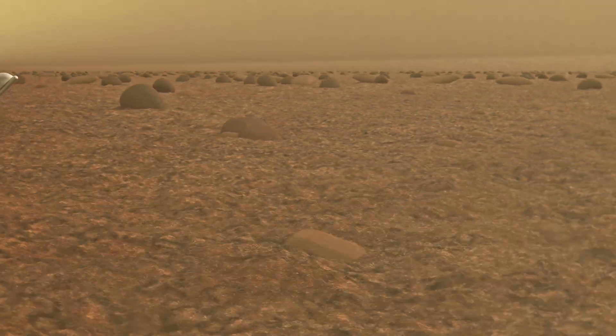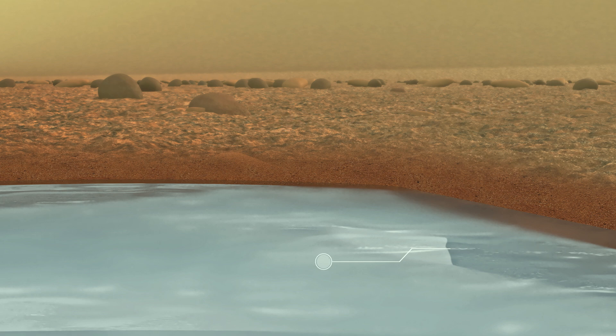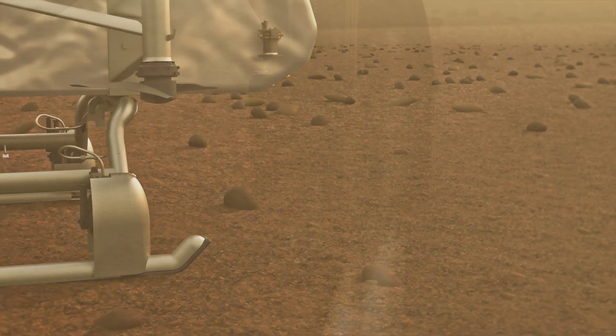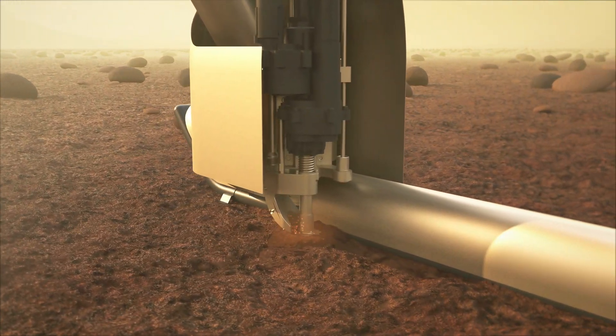Dragonfly determines if there are well-defined layers of these materials just below the lander. For a closer inspection, Dragonfly uses its drill to generate tailings from Titan's hard, frozen surface.